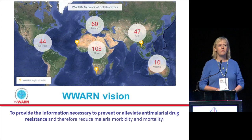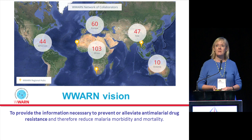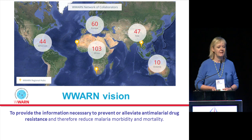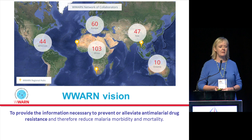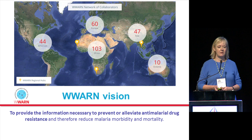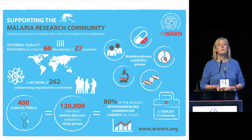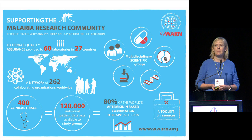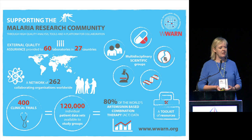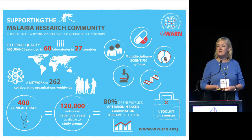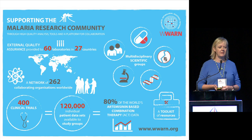The Worldwide Antimalarial Resistance Network, more fondly known as WARN, has a vision to provide information necessary to prevent and alleviate antimalarial drug resistance and thereby reduce malaria morbidity and mortality. When we say worldwide, we really mean worldwide — with over 260 partners across the globe, with centers based all over, including in Cape Town. WARN works to support the malaria research community by providing high-quality analysis tools and, most importantly, a platform for collaboration between the people that generate data and the people that use data. We've included over 400 clinical trials on artemisinin combination therapy, about 80% of currently available data.